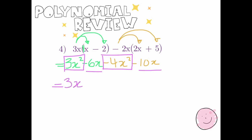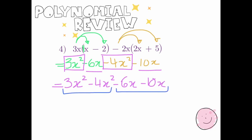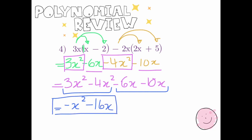So 3x squared minus 4x squared are like terms, and negative 6x minus 10x are like terms. Adding those two pairs: 3 take away 4 is negative 1x squared, and negative 6x minus 10x is negative 16x. You cannot add these together any further — they're unlike terms — so that would be our final answer.